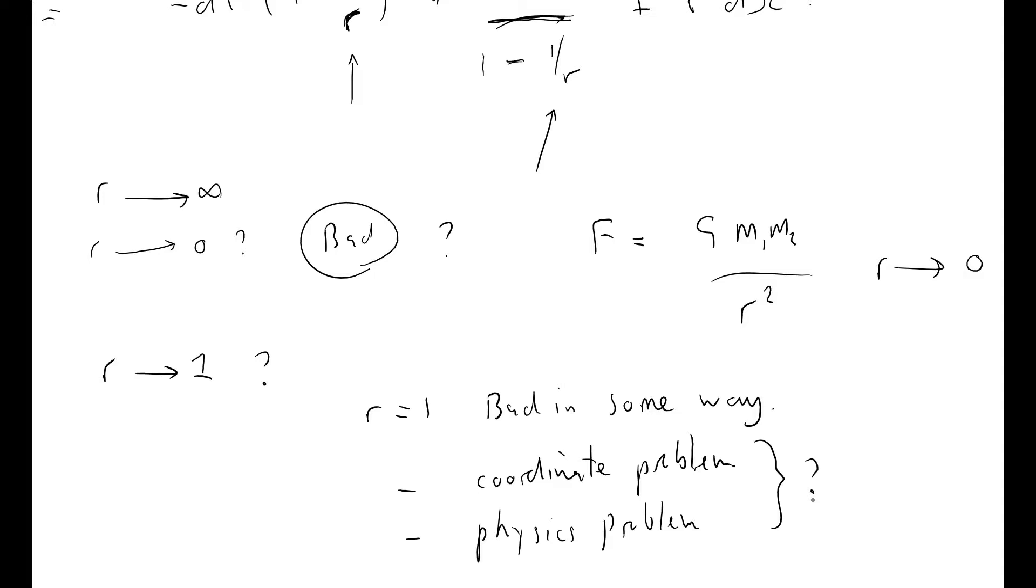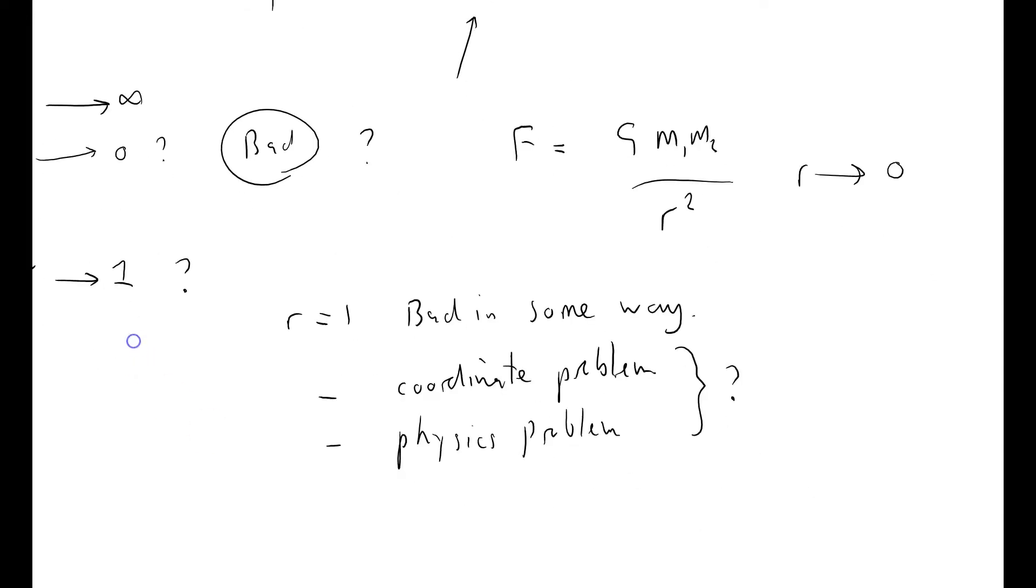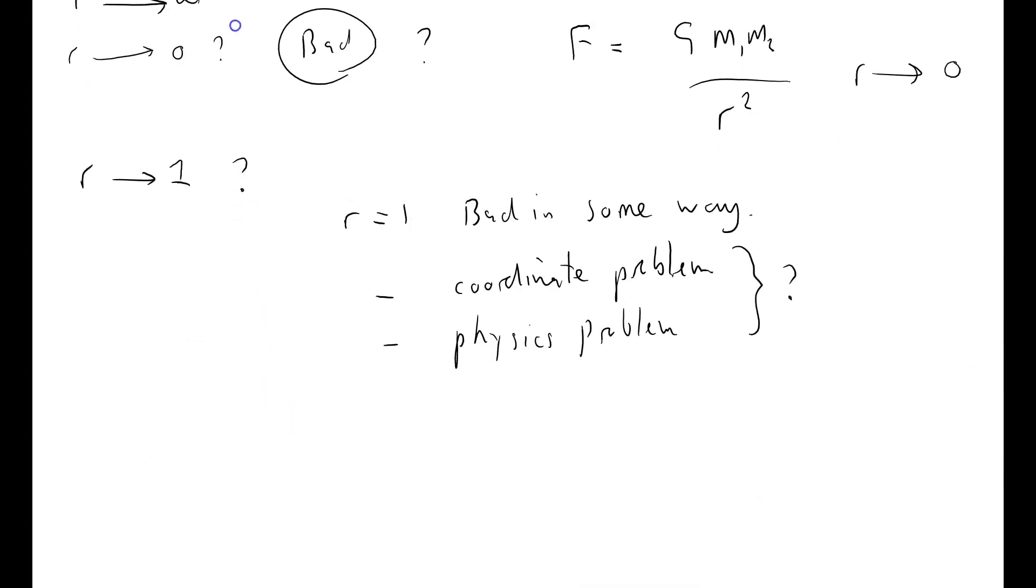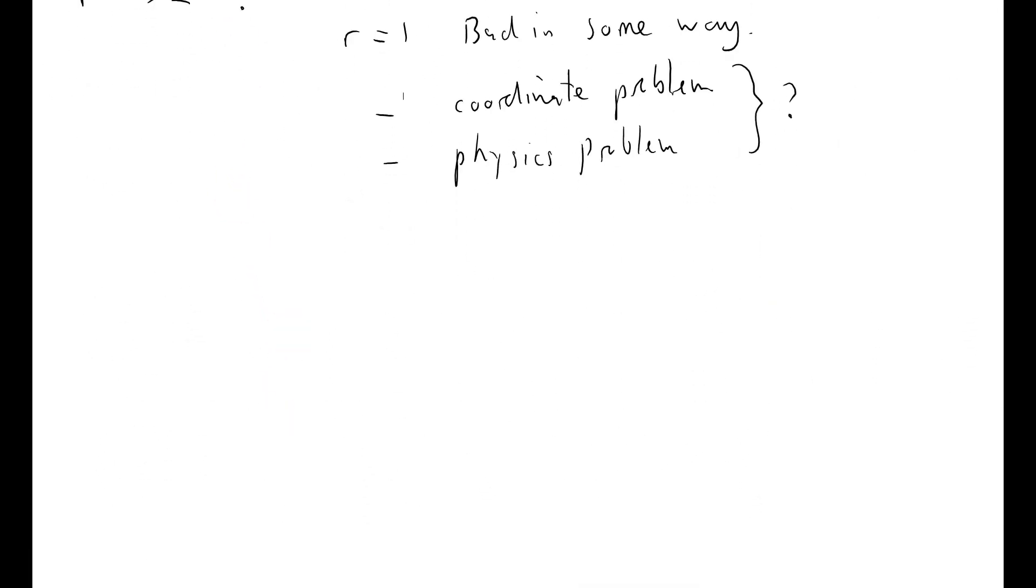If it's a coordinate problem, it means that it's not quite so bad. If it's a coordinate problem, what that means is that we've just chosen peculiar units or a peculiar coordinate system to express the space-time. And that coordinate system has a peculiar problem. So I'm going to illustrate the kind of thing that might happen.